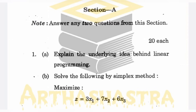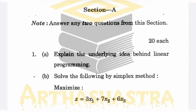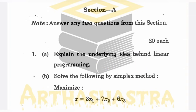Question number 1 is based on Linear Programming. You can find this topic in Block 4, Unit 13. Part A is a theory question which you can answer by summarizing sections 13.1 to 13.3. For Part B you can refer section 13.5.